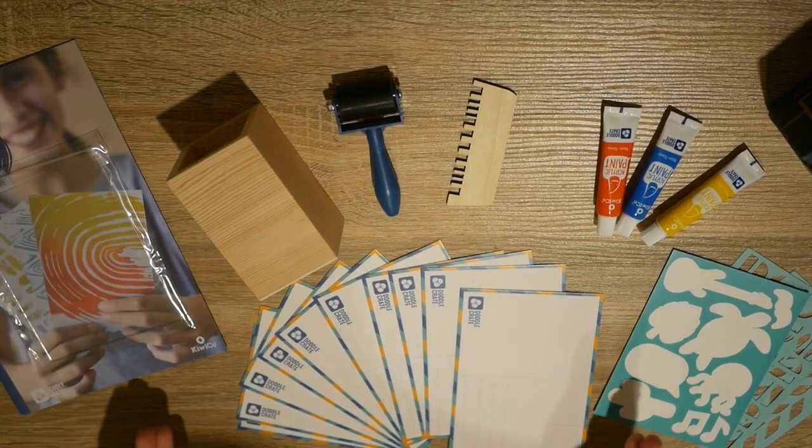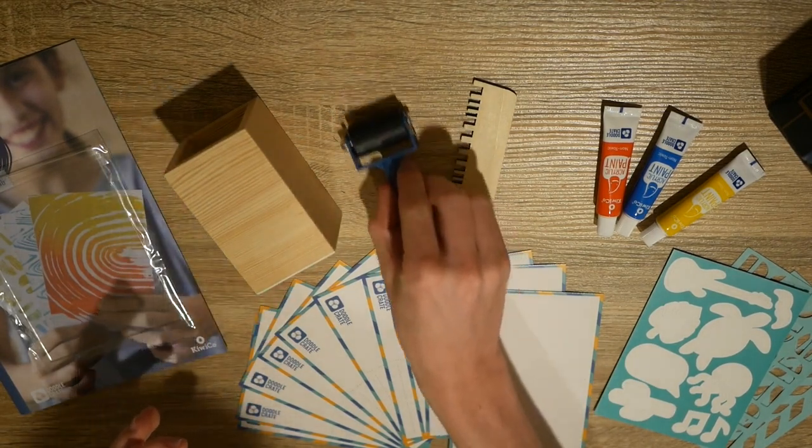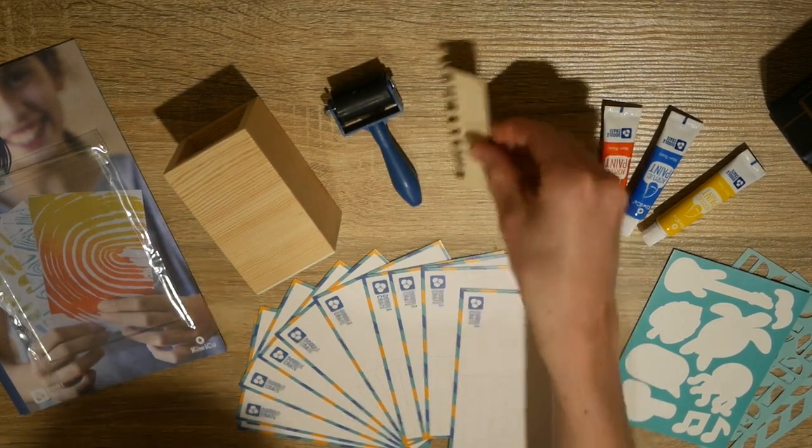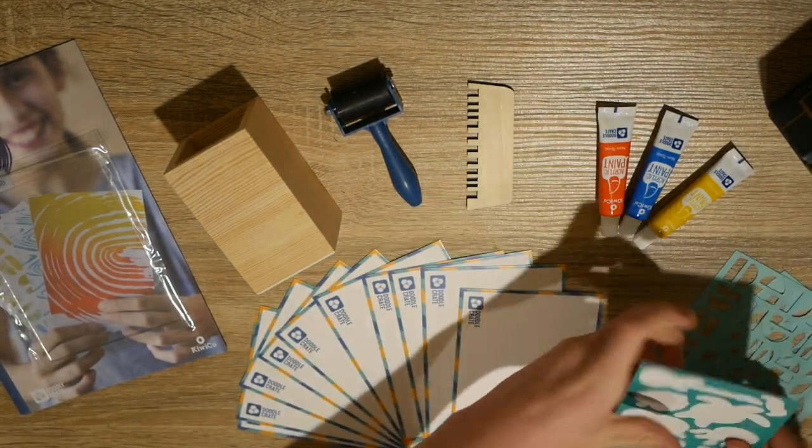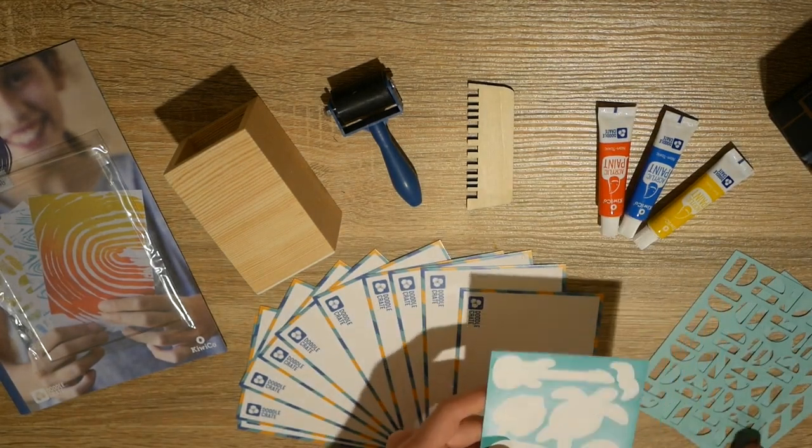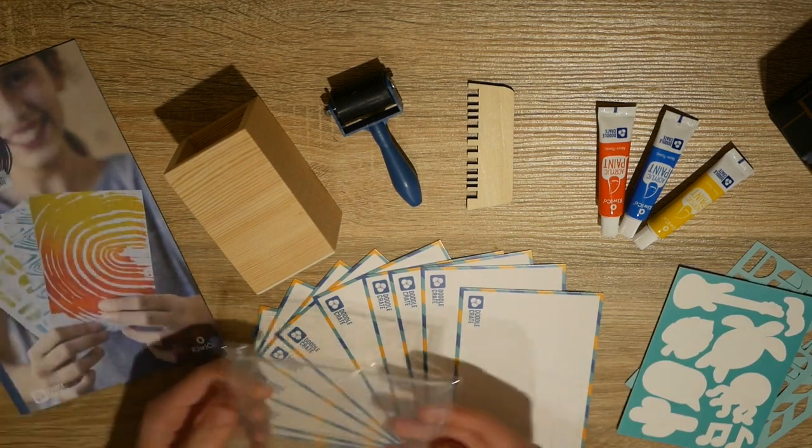So here before us we have all of the stuff that we're going to be needing to make this. We have our pencil holder, our paint roller, our comb for making patterns, our acrylic paints, a sticker sheet for customizing, stencils, postcards and the gel pad.